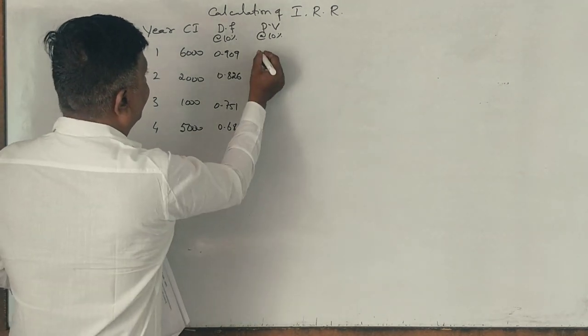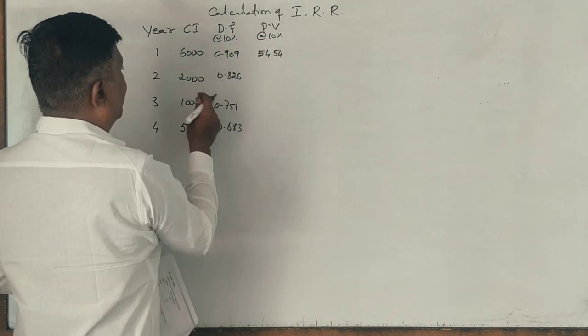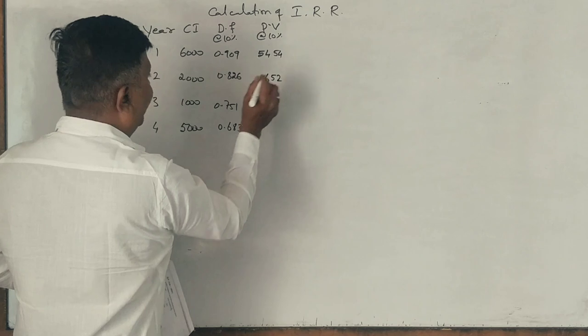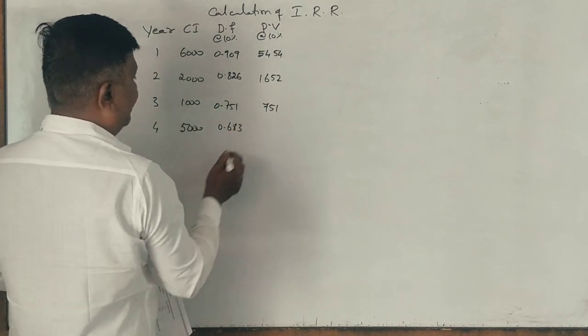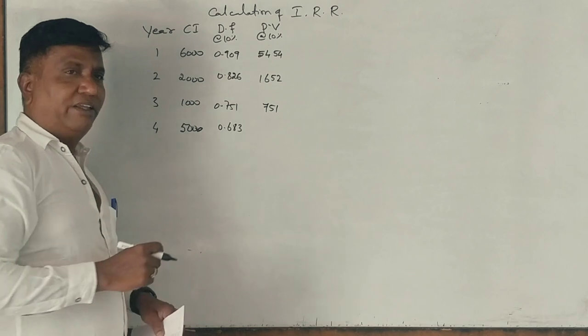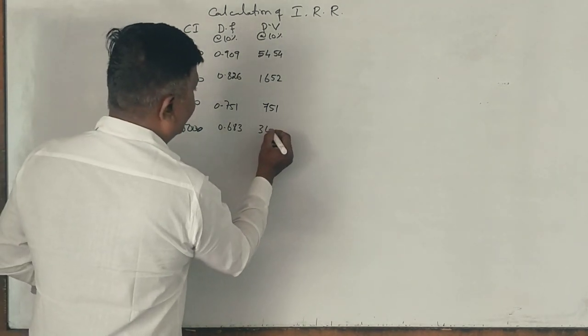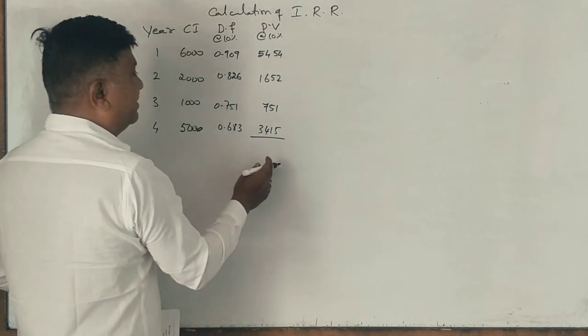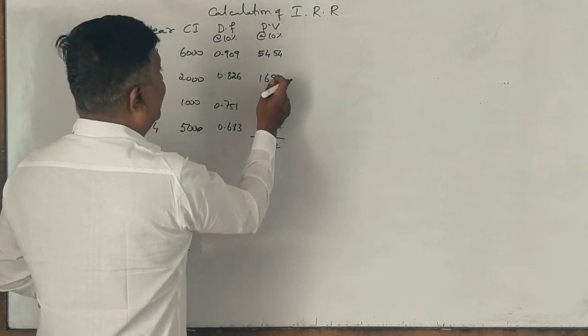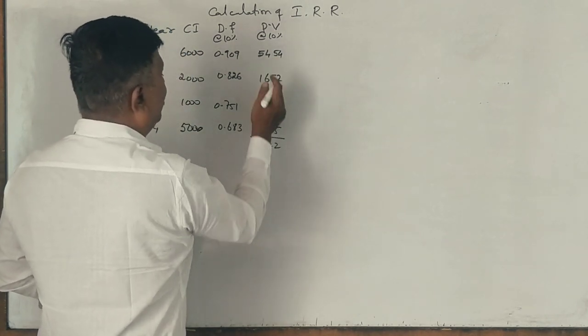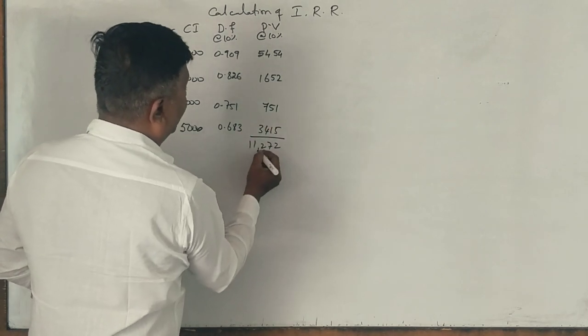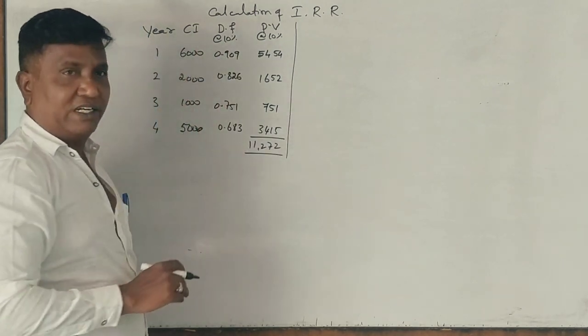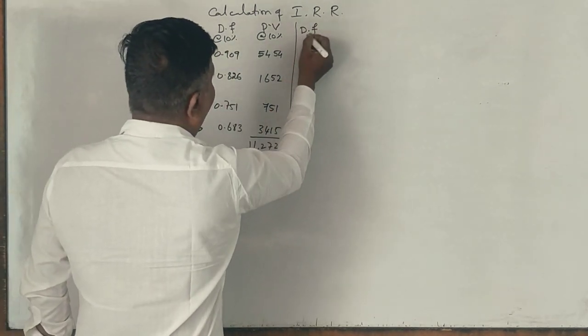5,000 into 0.909, 2,000 into 0.826, 1,000 into 0.751, 5,000 into 0.683. Okay, fine. This is 751. 0.683. 3,415. Now check the totals of this: 8, 12, 1 carry 7, 12, 17, 12, 18, 22, 5, 6 and 11. 11,272. Correct.